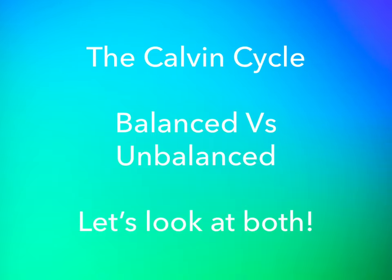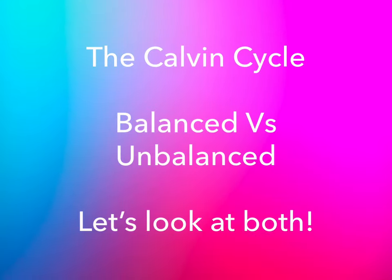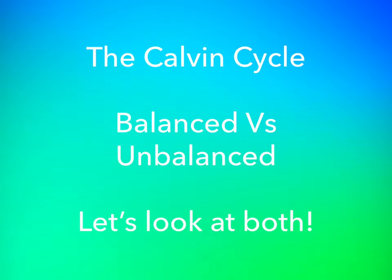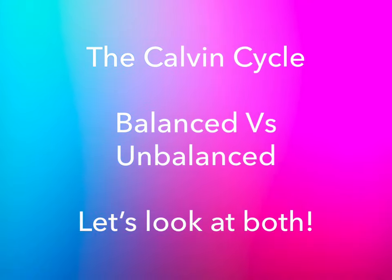When trying to explain the Calvin cycle with all the chemicals and stages it can get quite complicated. In this video I will first go through the stages and the names of the chemicals involved in the reactions where the number of carbons will not initially balance, but then I will repeat the process including the coefficients to balance the number of carbons throughout the cycle.